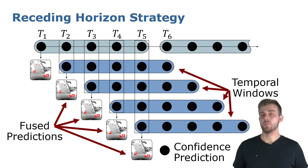This strategy allows to refine predictions when new measurements are available. The black dots in this image represent the confidence predictions over time. We compare a non-overlapping prediction strategy at the top with the receding horizon strategy below in blue.